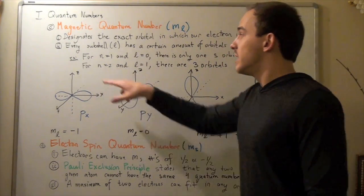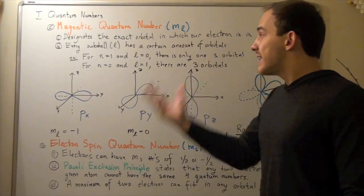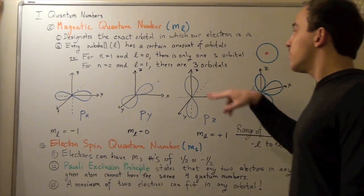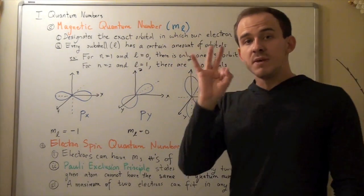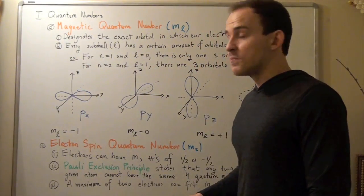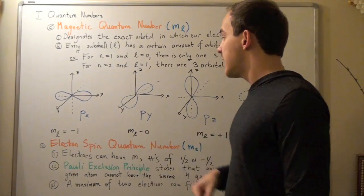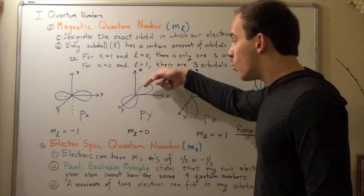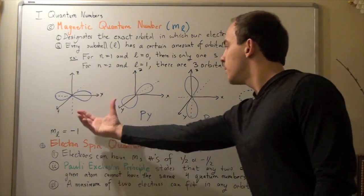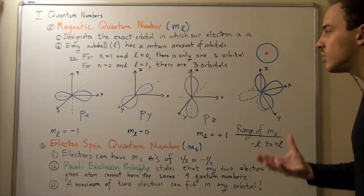If the principal quantum number N equals 2, then L equals 2 minus 1 equals 1, meaning there are three orbitals — the three P orbitals. There is one in the x direction (px), one in the y direction (py), and one in the z direction (pz). When put together, all three orbitals are perpendicular to each other because the x, y, and z axes are all perpendicular.